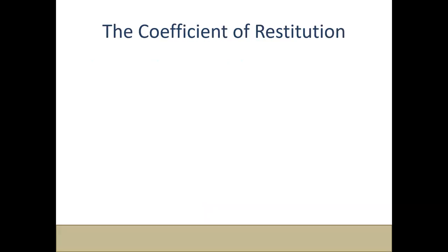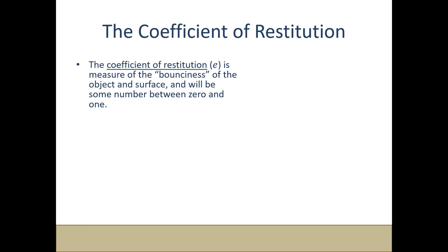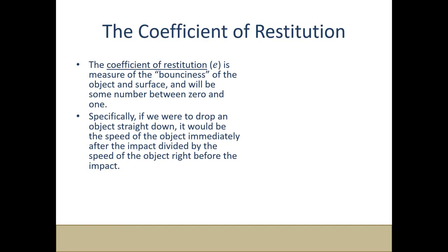So what is the coefficient of restitution? The simple answer is it's a measure of the bounciness of the object and the surface. It's going to be some number between zero and one, and we're going to use the Greek letter epsilon as the numerical representation of this. Specifically, if we were to drop an object straight down, the speed of the object immediately after the impact divided by the speed of the object directly before the impact is the coefficient of restitution.